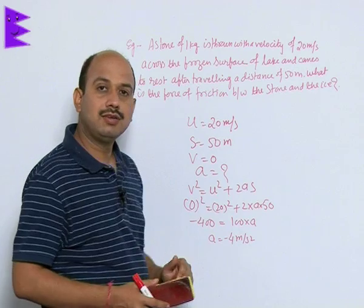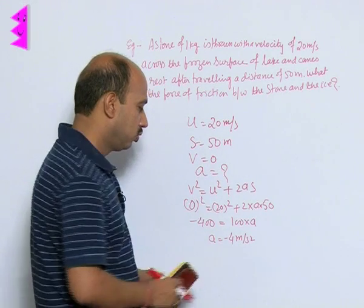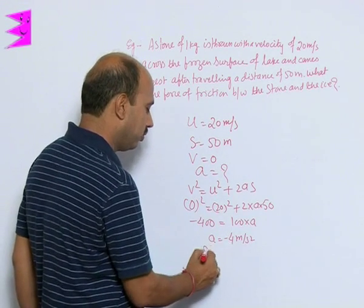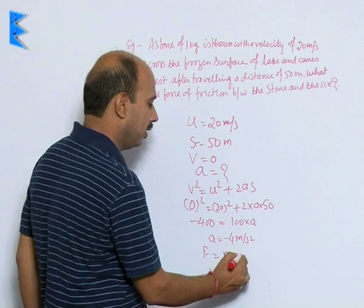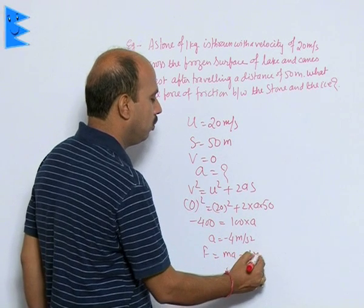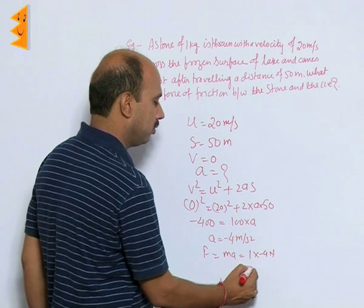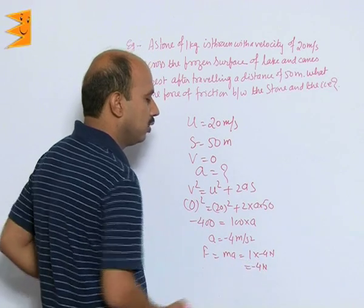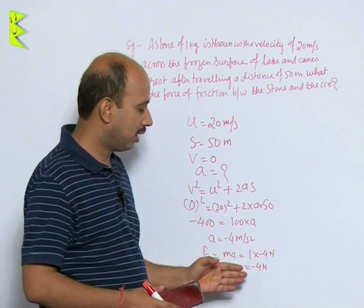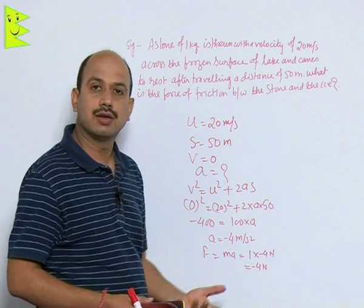What does this negative sign indicate? There is retardation. So here we can write force is equal to m into a, so that is 1 into minus 4 Newton, so that is minus 4 Newton. This minus sign indicates that the force is retarding.